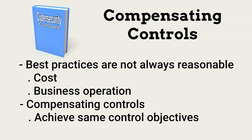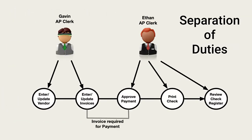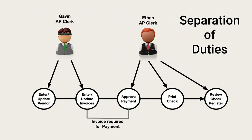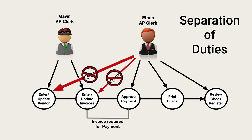Let's look at an example of an accounts payable function. Gavin and Ethan are AP clerks. This graphic shows separation of duties, which prevents any one person from performing all required tasks needed to complete a business function — in this case, making payments to vendors. Gavin can create and update vendor records and enter and modify invoices, but cannot approve and send payments. Ethan approves invoice payment, prints checks, and reviews the check register, but cannot enter vendors or invoices. This is enforced by application authorization restrictions assigned to specific roles.